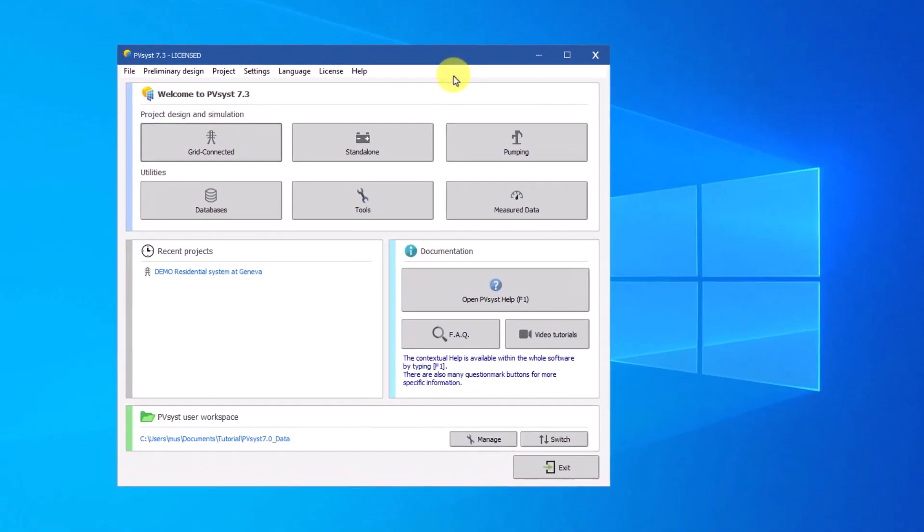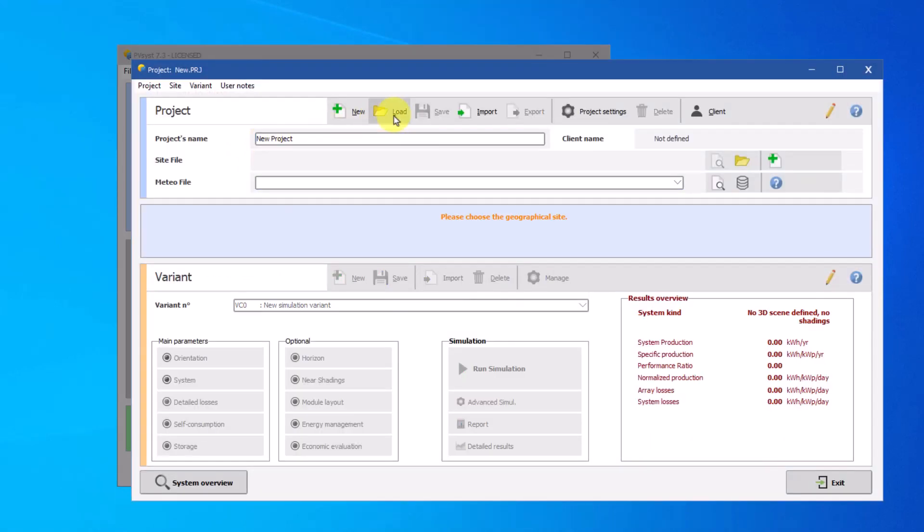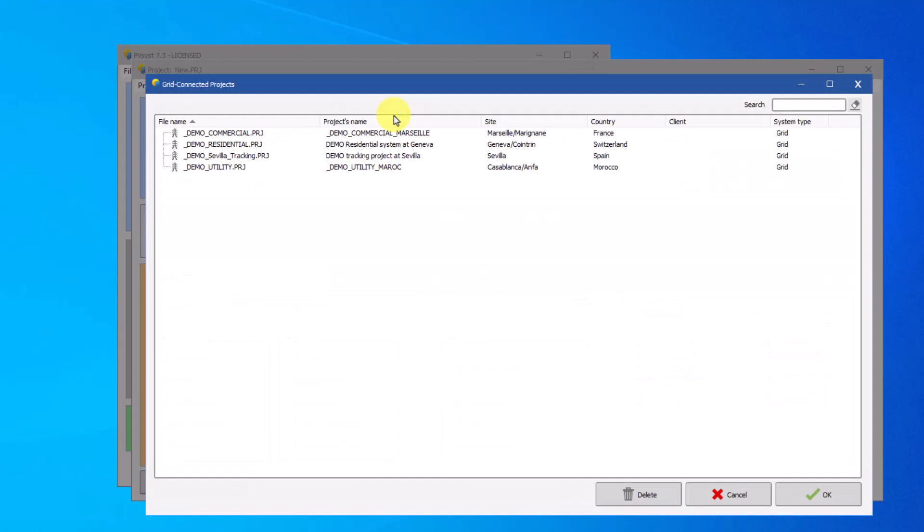After starting PVSYST, start by clicking the button Grid Connected. In this tutorial, we will use the DEMO Residential Project in Geneva. Click on Load and choose the DEMO Residential System at Geneva Project.